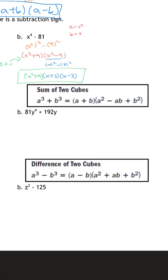Now sum of cubes and difference of cubes — make sure you have the two formulas written down. For sum of cubes: a³ + b³ = (a + b)(a² − ab + b²). For difference of cubes: a³ − b³ = (a − b)(a² + ab + b²). All you're doing is flipping those two signs; the rest of the formula is the exact same. Since it's a cube, signs don't really matter — you can take the cube root of negative numbers.